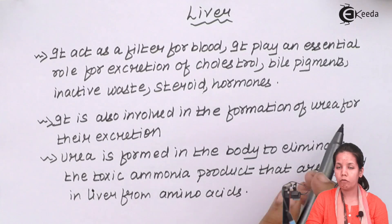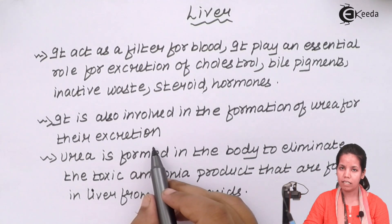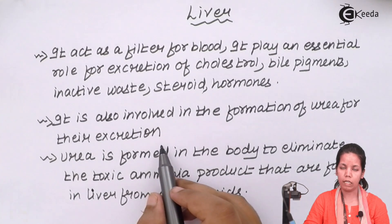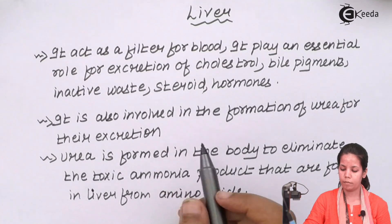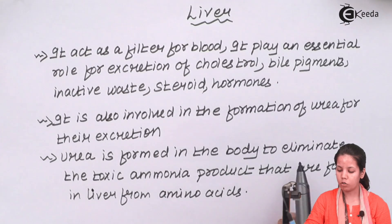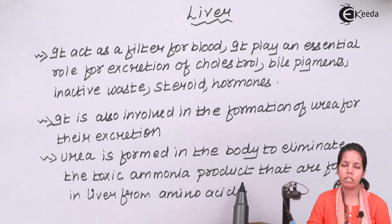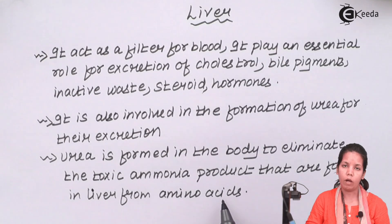Liver is greatly involved in the formation of urea, which is a byproduct of your body, and for its excretion or removal from your system. A large amount of urea stored in the body can lead to certain diseases or even initiate kidney stone formation. Urea is formed in the body to eliminate toxic ammonia products that are part of your excretory waste — your non-nitrogenous waste — and they are formed in the liver from amino acids or the breakdown of amino acids.